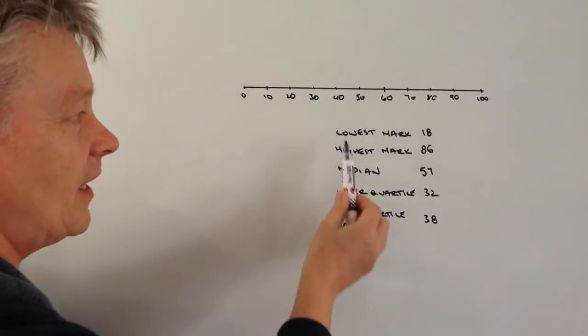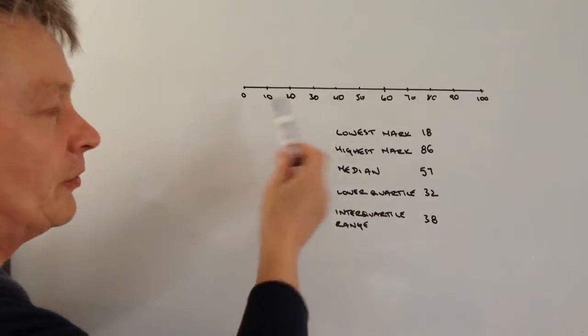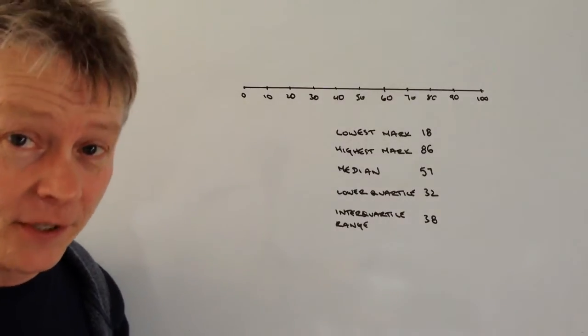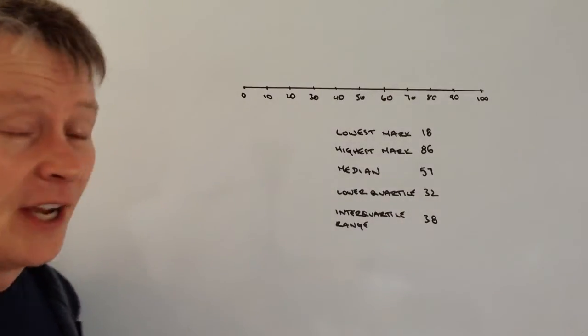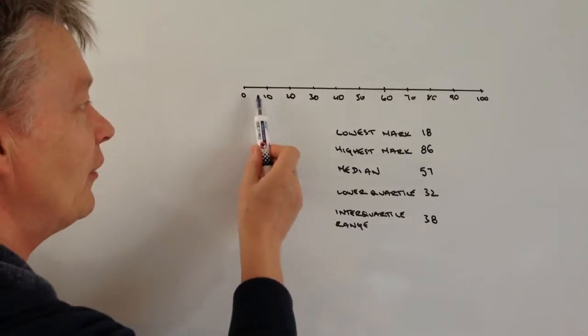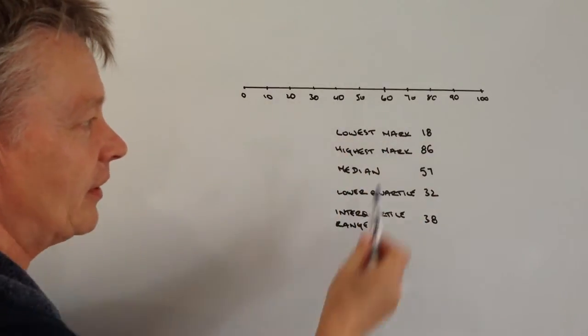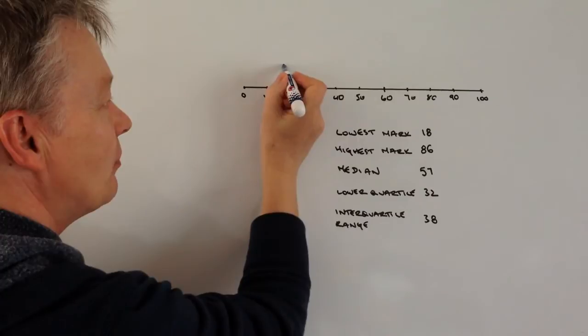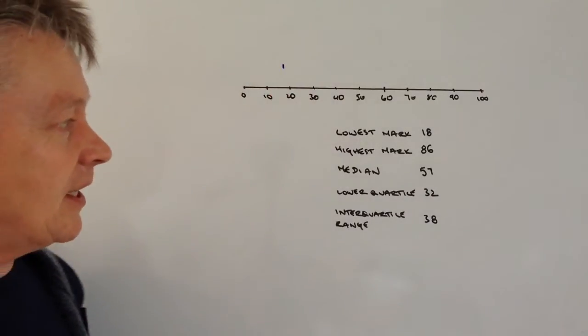So the first thing is the lowest mark. Normally you're given a little bit of grid paper to do this, but for the purposes of the video, it's just going to be a straight line with the marks put on here. So the lowest mark is 18, I'm just going to put a little mark there at 18.